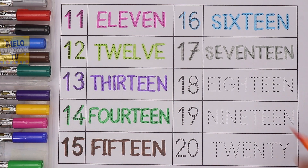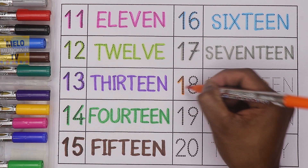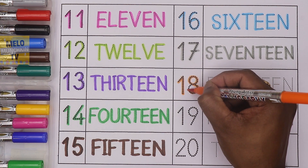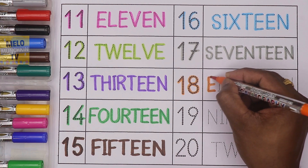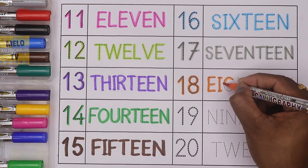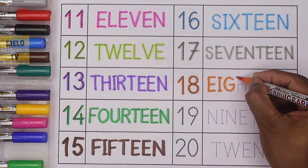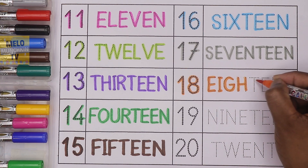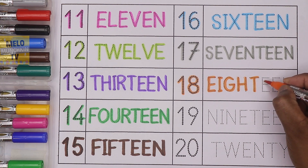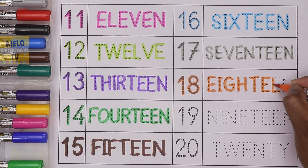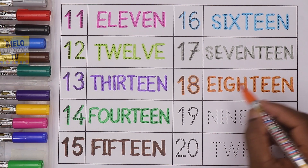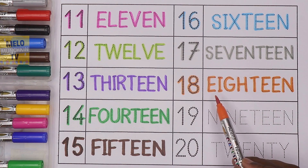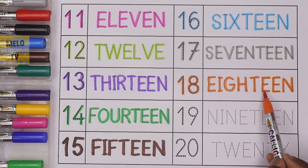Next I'll take orange color — this is orange color — to write number 18. 1, 8, 18. And the spelling is E I G H T E E N. 18, 1, 8, 18. E I G H T E E N, 18.